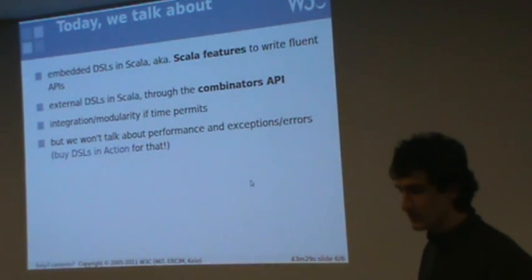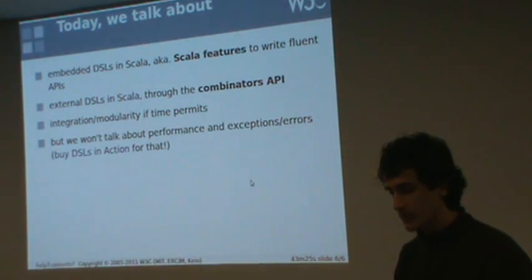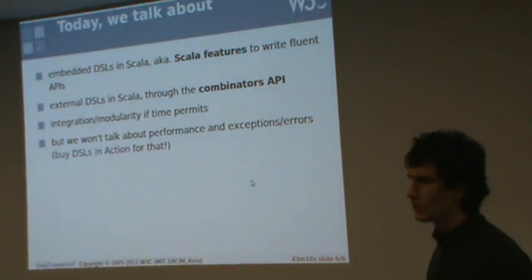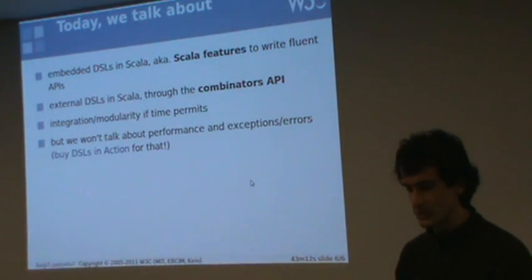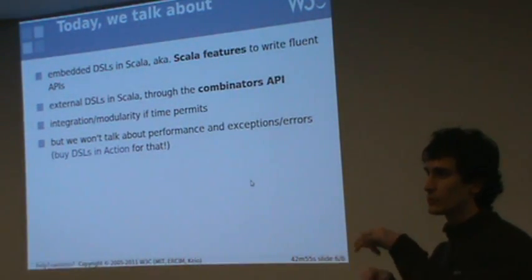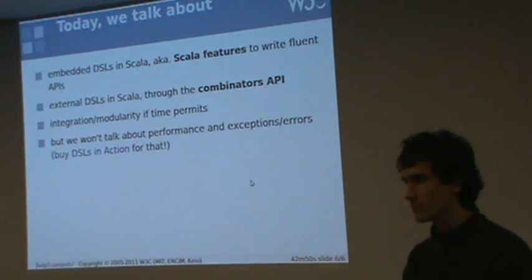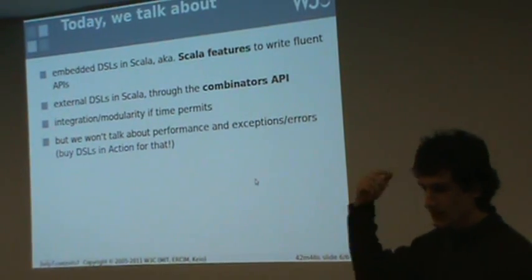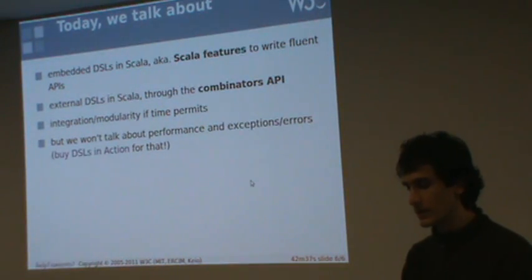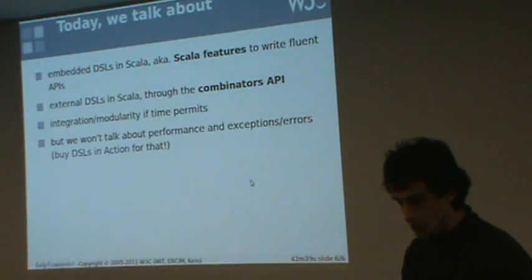So let's get started. I have time; I will speak about parser combinators for a little language. Combinators is just a way to write a parser but you stay in Scala — it's a library instead of using something like ANTLR. You had the equivalent in Java but we want to stay in Scala to write our parser, and that's really interesting. I would also like to speak about integration and modularity — basically you have several DSLs and you want to combine them. And I would definitely not speak about performance issues and how you deal with exceptions. I think there is actually an entire chapter about that in the book, so you'll just have to buy it.